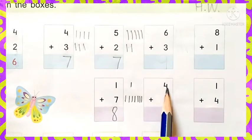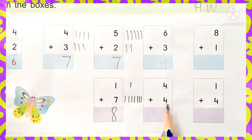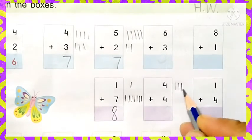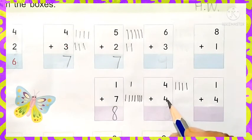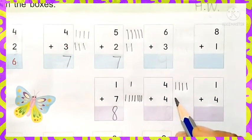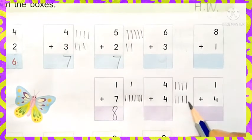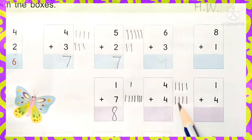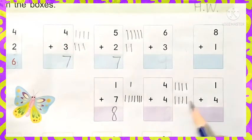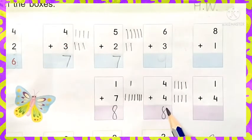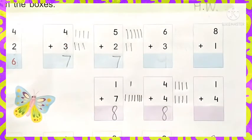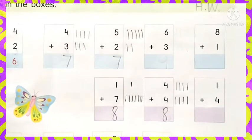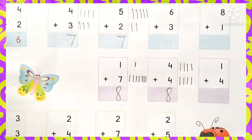Here, four plus four. Draw four lines upside: one, two, three, four. And the downside, draw again four lines: one, two, three, four. Count together all the lines: one, two, three, four, five, six, seven, eight. Answer is eight. These sums are very easy, children. You will do all the sums in this page in homework.